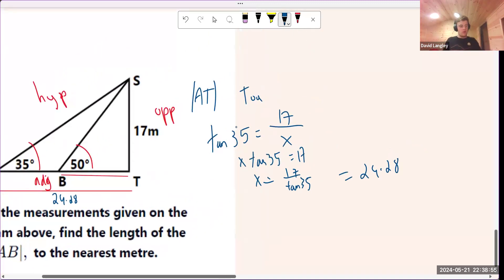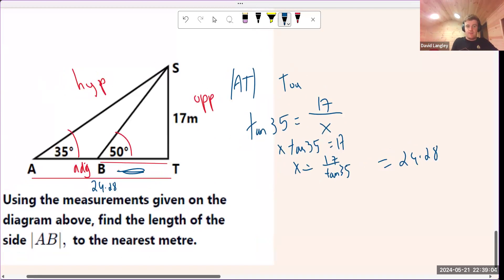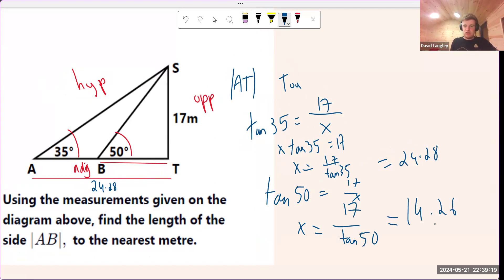What if we wanted to find the side BT? So this little bit left over in here. Well, then we're just going to do the exact same, but we're going to say tan of 50, and that would be 17 over x. And so then x is going to be 17 over tan 50. Plug that into your calculator. You get 14.26.